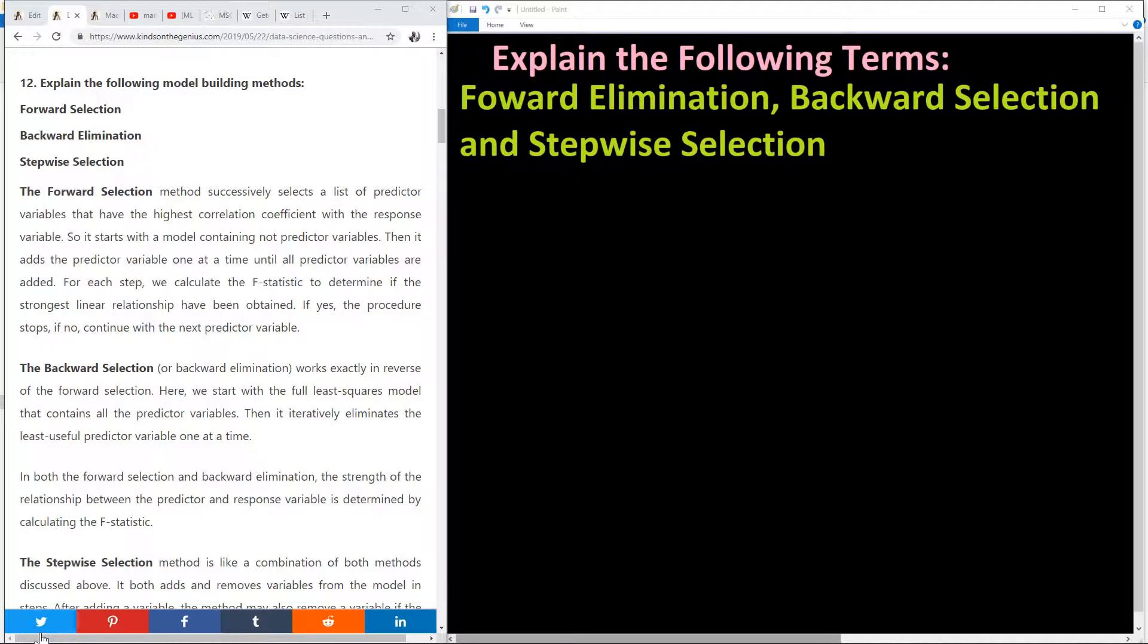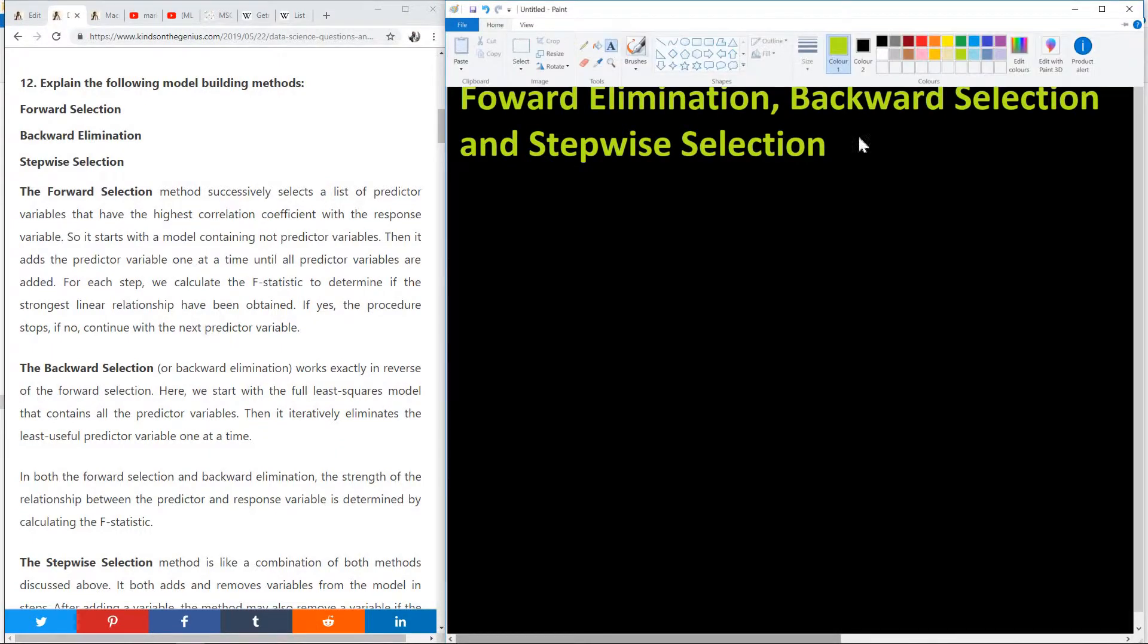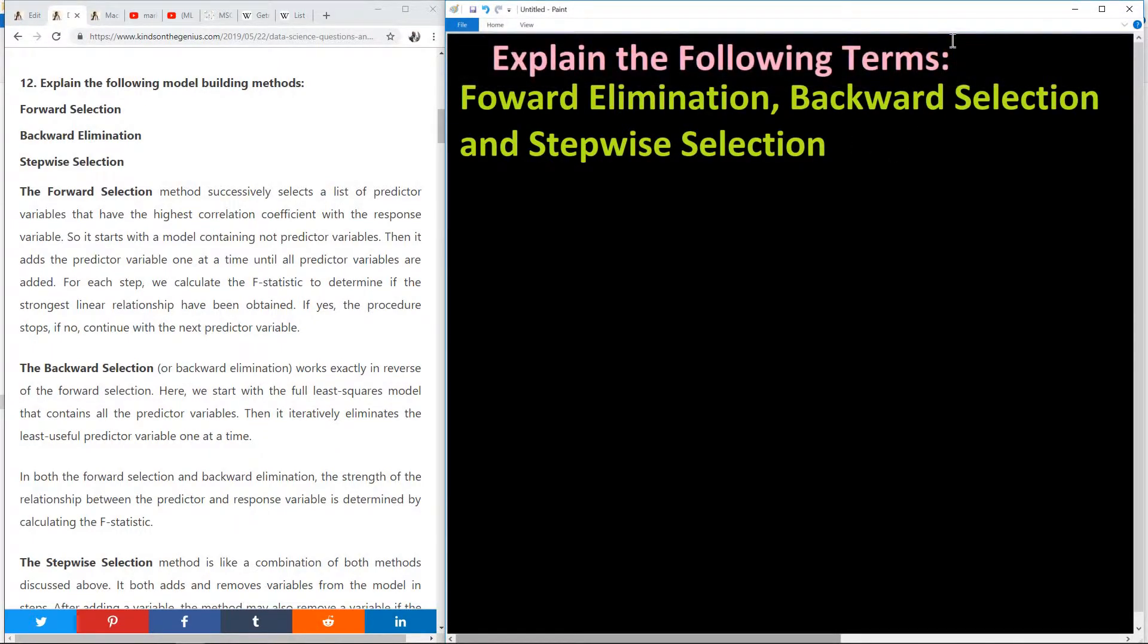And that is very important because it's good for you to understand the concepts. So when we actually do the analytics using notations, it becomes easier to understand. So we are talking about the following terms: forward elimination, backward selection, and stepwise selection. These are terms applied in model building, and I'm going to tell you exactly where it applies.